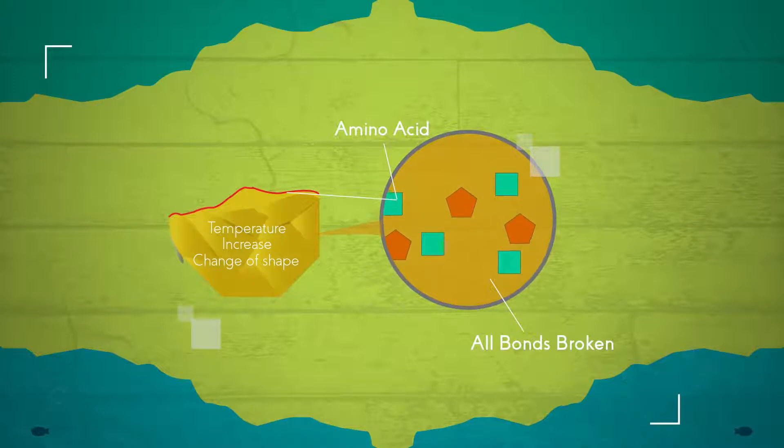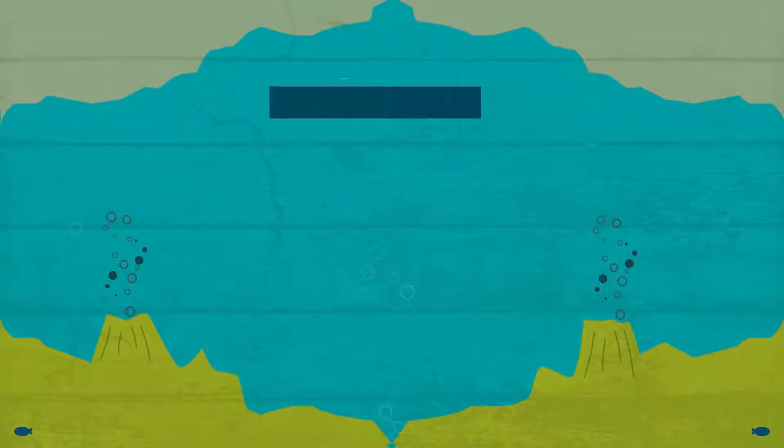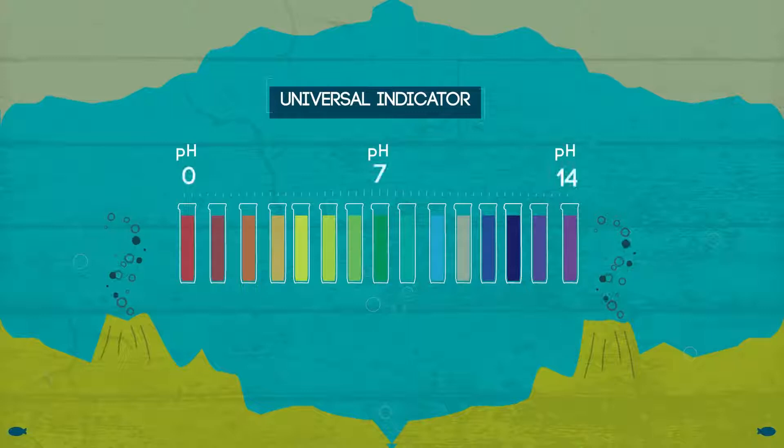Another important variable is pH. A pH level which is either too high or too low for a particular enzyme can lead to change of protein structure. Different enzymes will have different optimal pHs.